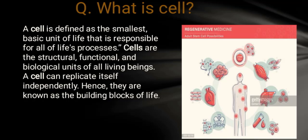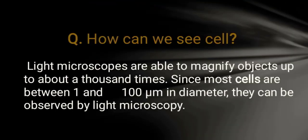A cell can replicate itself independently; hence they are known as the building blocks of life. Our body's life processes and basic structure of life depend on cells. If there is no cell, life is not possible. A cell can replicate and duplicate itself.